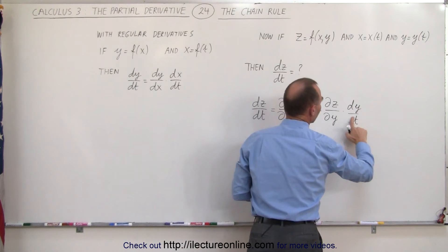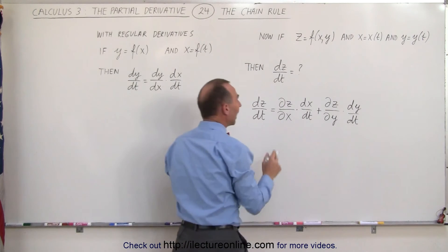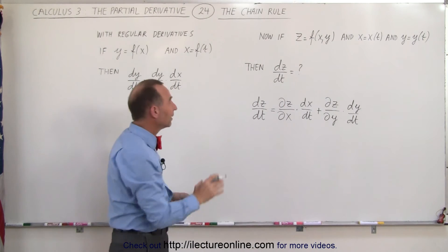And this doesn't look very good here. It's supposed to be a d. All right, and that will then be what we call dz/dt.